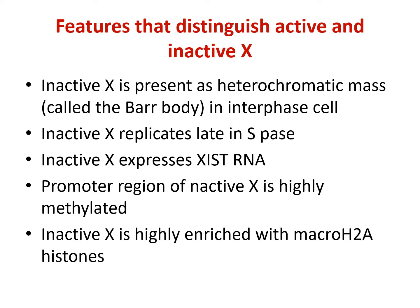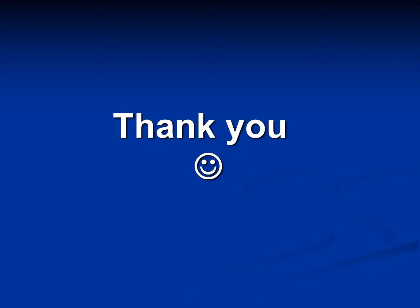Some features that distinguish active and inactive X: the inactive X is present as a heterochromatic mass called the Barr body in interphase cells. Inactive X replicates late in S phase. Inactive X expresses XIST RNA. The promoter region of inactive X is highly methylated. And inactive X is highly enriched with macroH2A histones — special types of histones. Thank you, we're done with the topic of sex determination and X inactivation. Have a nice day.